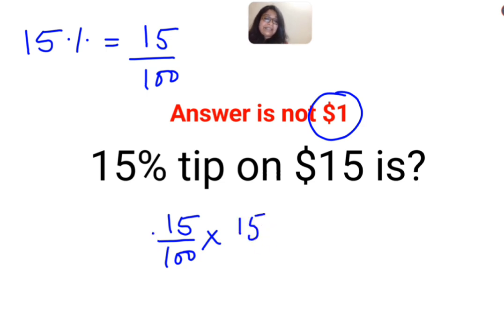So this is basically 15 multiplied by 15 is 225 divided by 100.